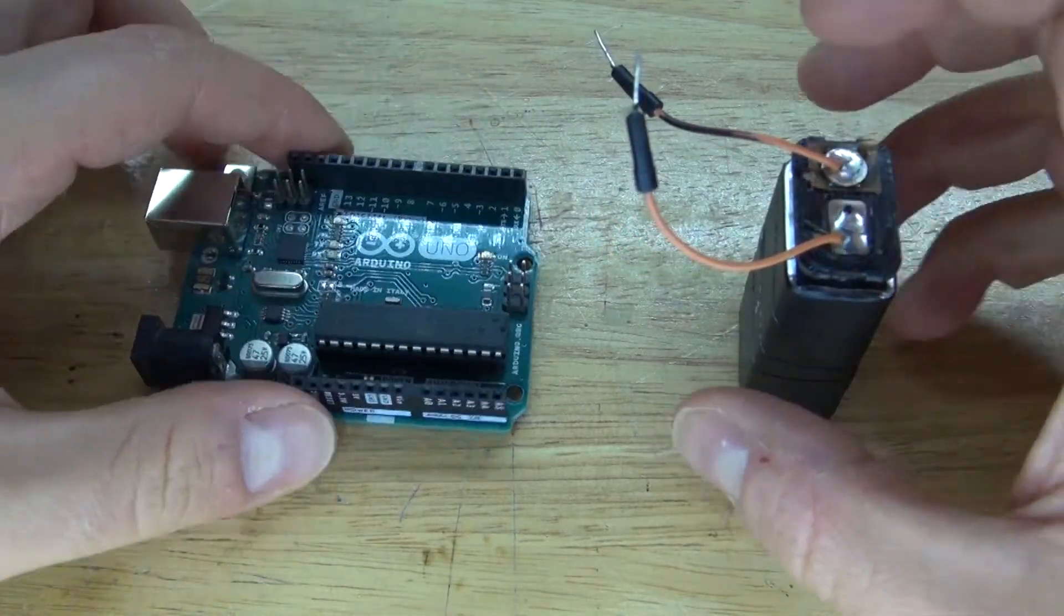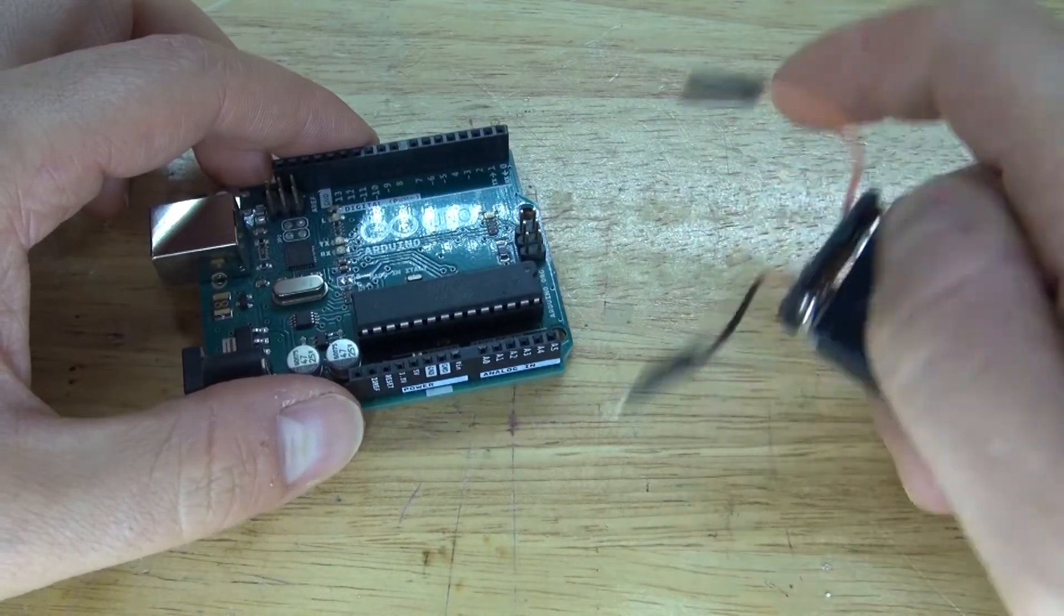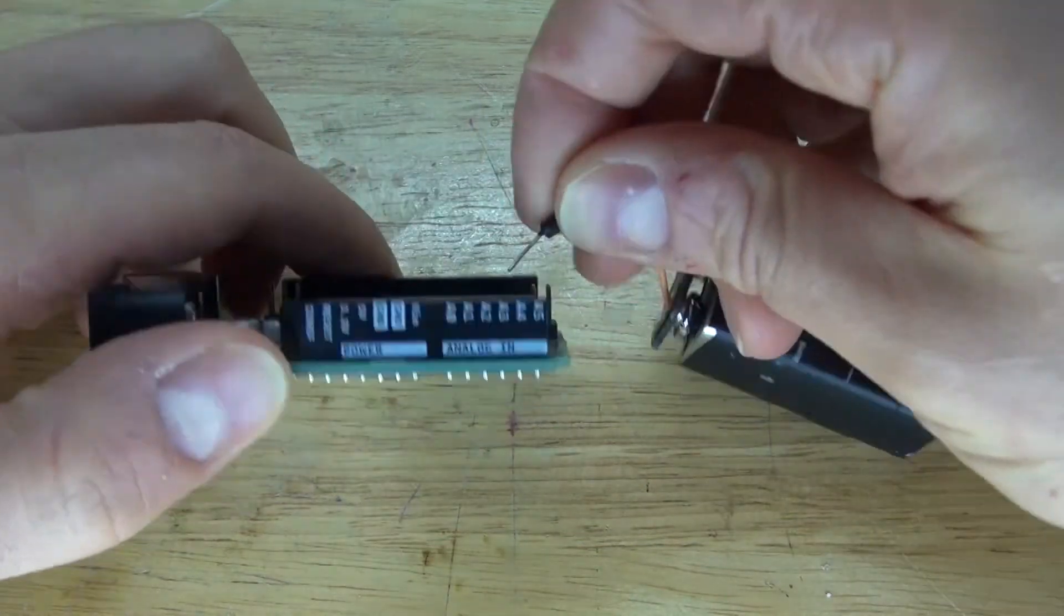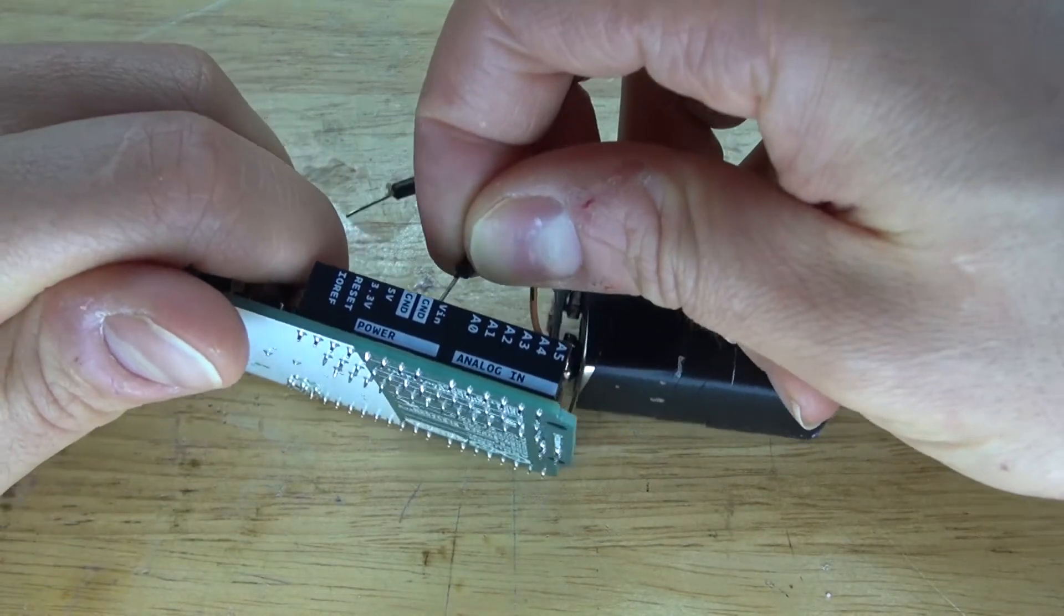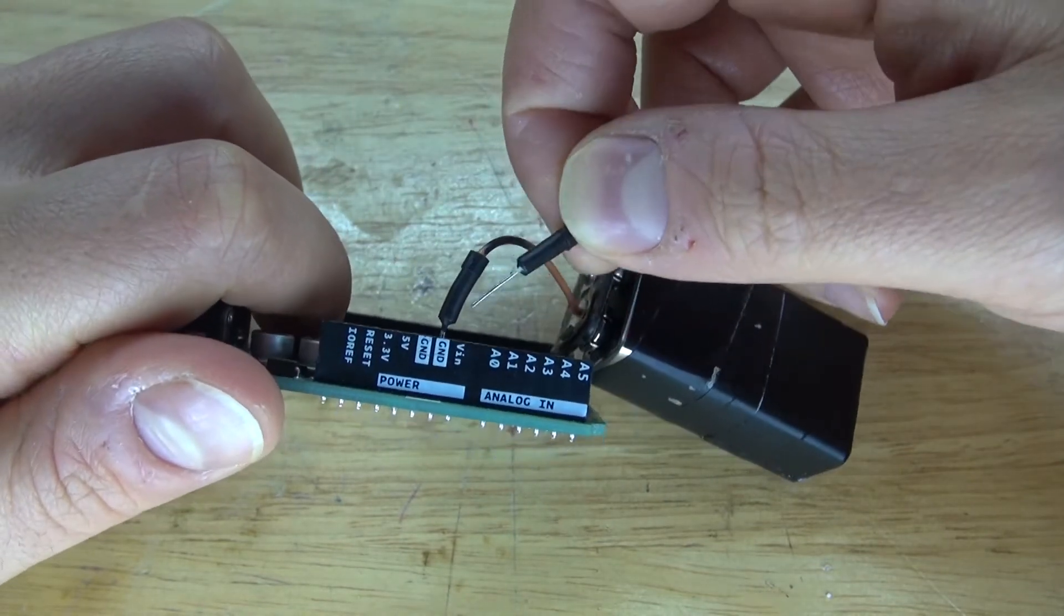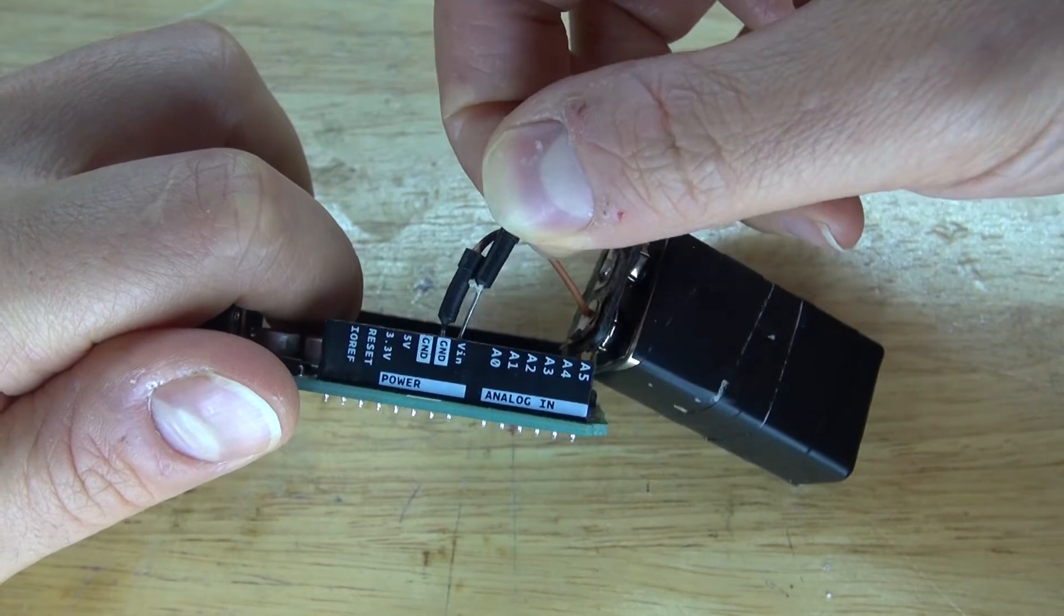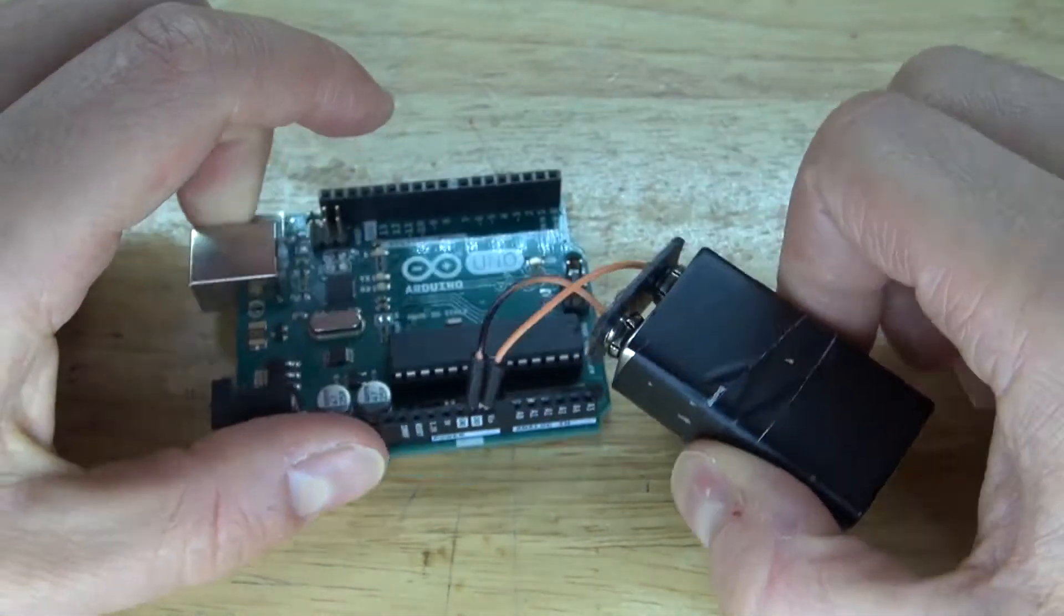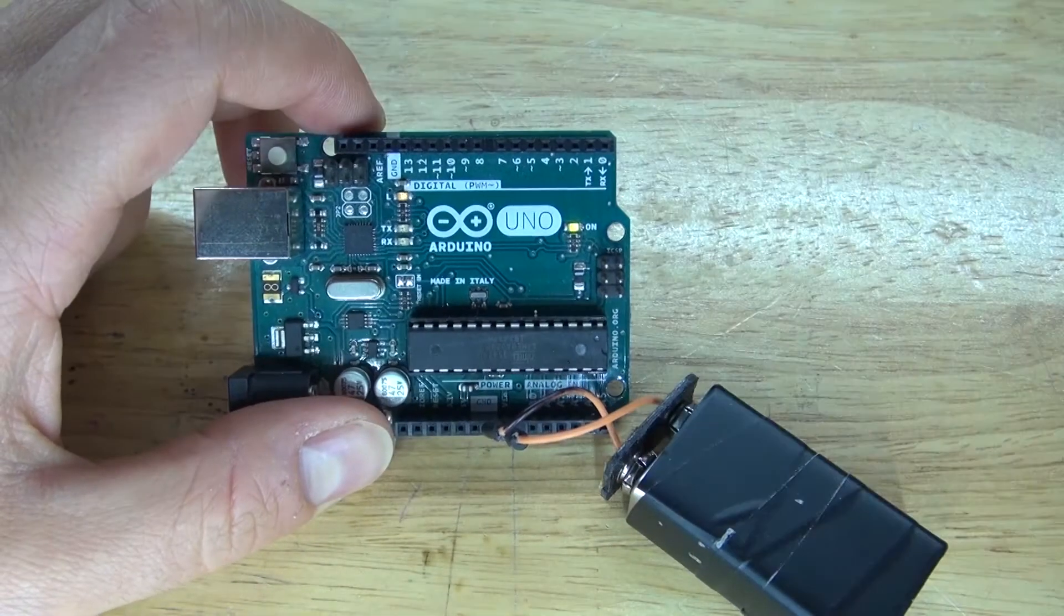I have right here an Arduino Uno. And I'll take the negative wire and connect it to ground. And then take the positive wire and connect it to VIN or voltage input. And there, the Arduino Uno works.